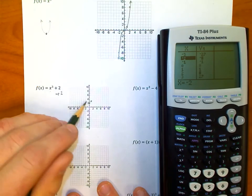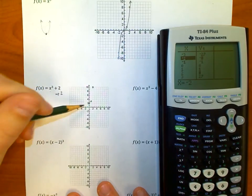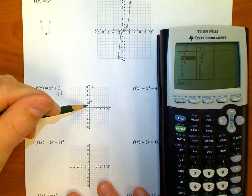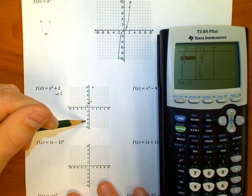Over one, up one; over two, up eight. Over here I go over one, down one; over two, down eight, which will be right here, and negative 6.